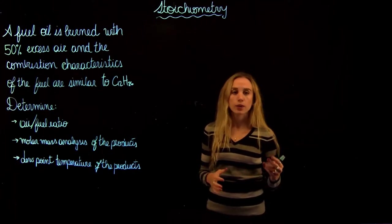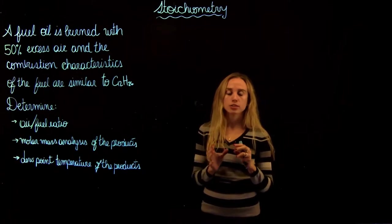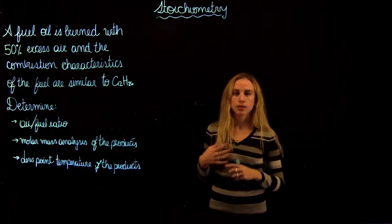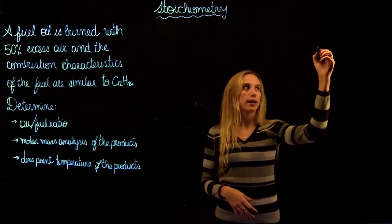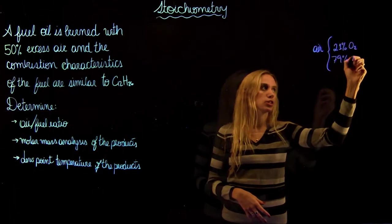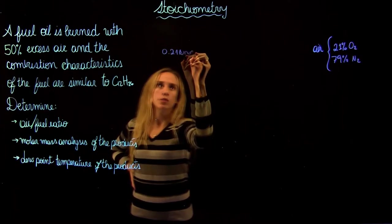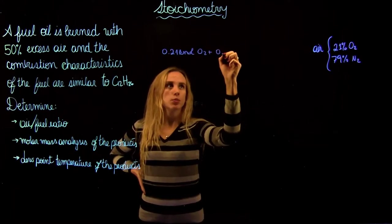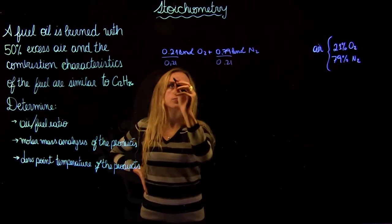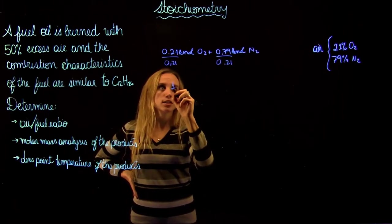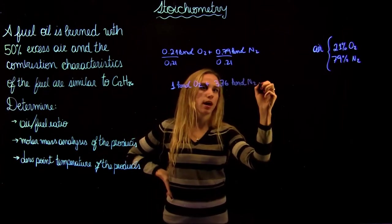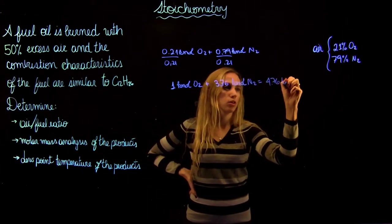A combustion process is a chemical reaction where fuel is oxidized, most of the time by air, and releases a large amount of energy. Air is composed of oxygen, nitrogen, argon, and other gases, but to simplify the analysis, we say air is composed of 21% oxygen and 79% nitrogen. This gives us 0.21 kilomol of O2 plus 0.79 kilomol of N2. Dividing by 0.21, for each kilomol of oxygen we need 3.76 kilomol of nitrogen, giving 4.76 kilomol of air.